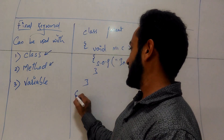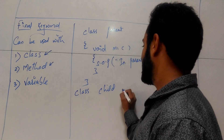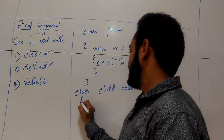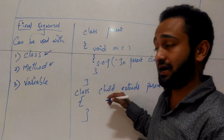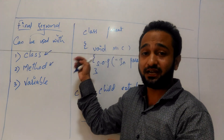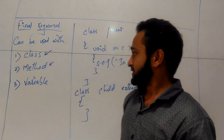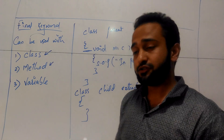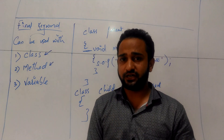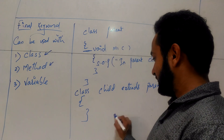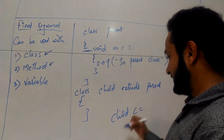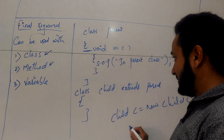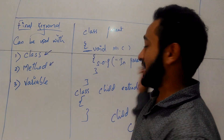Now I am writing class Child extends Parent. My child class inherits all the properties of parent — all members except private data. The m1 method's access modifier is default, so it will get inherited in child. If I create an object of the child class — Child c = new Child() — and call c.m1(), then "in parent class" will get printed.